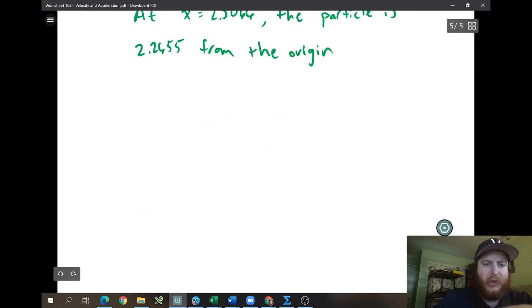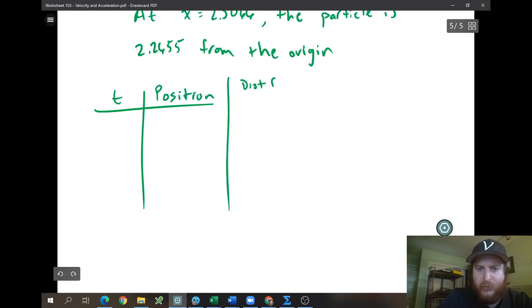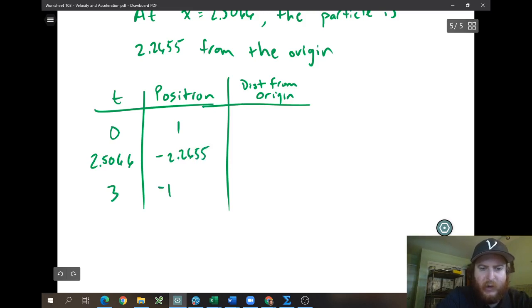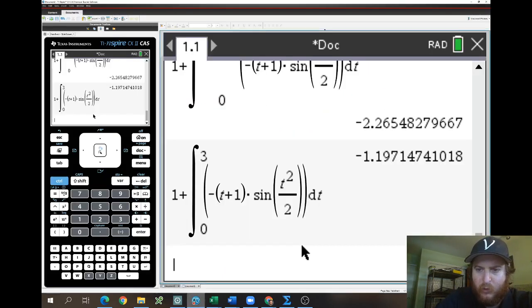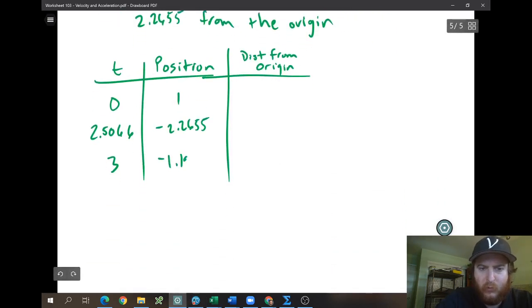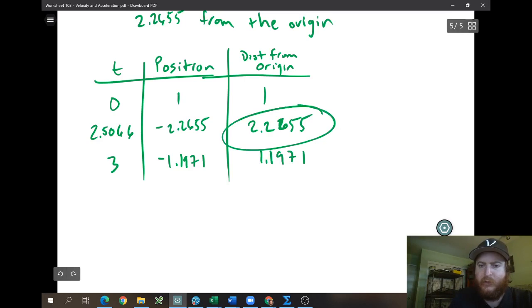All right, but that's kind of how that one worked. I have seen, like, one answer key that used this. What they did, that kind of made sense as well, is they just did time, and then they did position, and then they did distance from the origin. And this might make more sense to you. So what they did is they kind of did our same normal starting 2.5066 and 3. So we got 1, we had negative 2.2655, and we had negative 1 point. I should have gone up to 4 decimals. 1, 9, 7, 1. And then I just said, okay, well, the distance from the origin, we're just going to turn those positive. And so then, right, had they said maximum position, it would have been 1, right? But they said maximum distance from the origin, so it's that good.